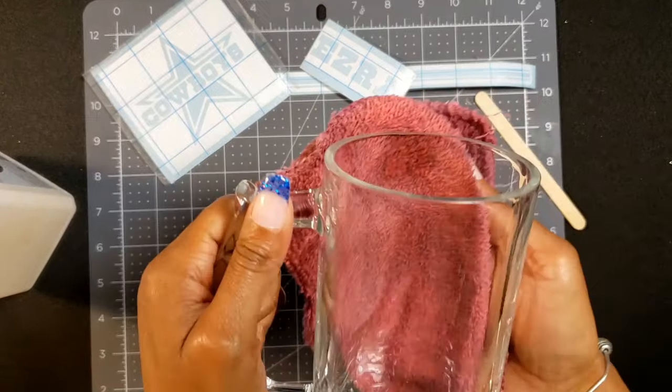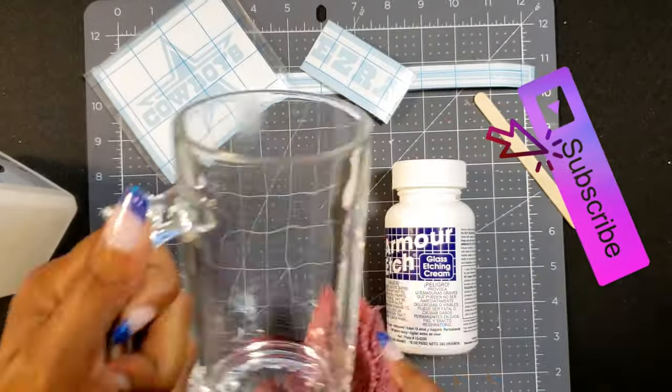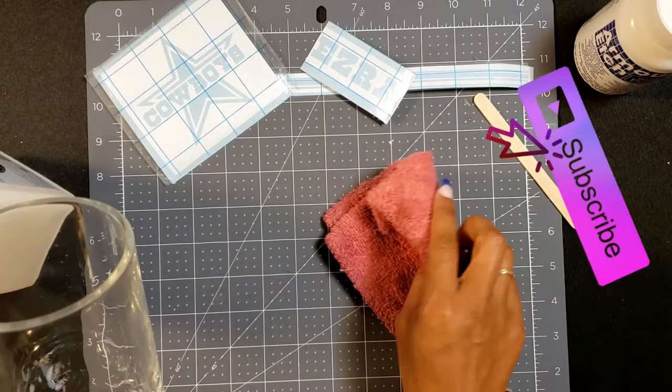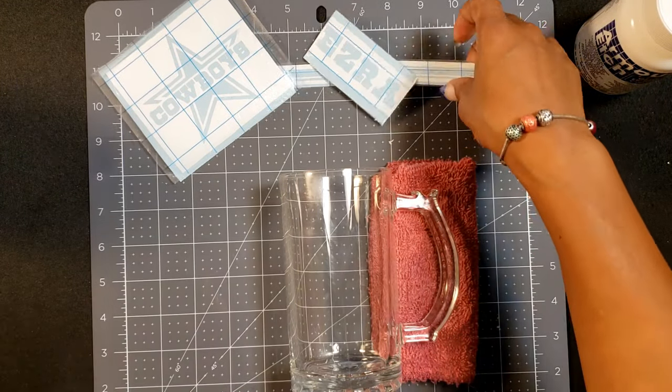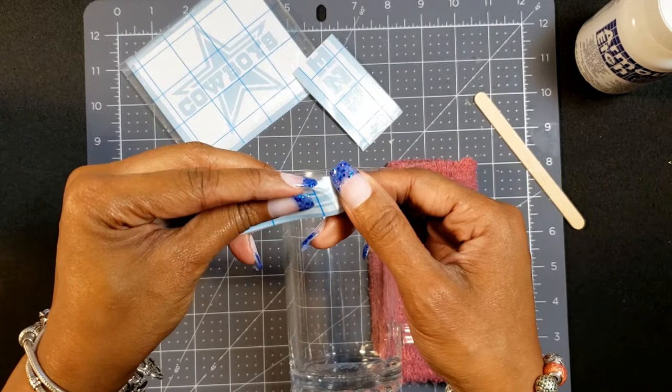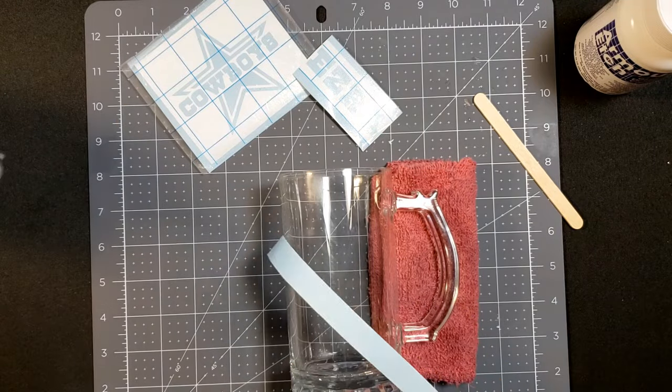We're going to start off with some alcohol to clean the glass really well. We always want to prepare our surfaces when we are going to add a decal of any kind. I'm using a towel here to help balance the mug so it doesn't roll all around when I'm applying my decals.